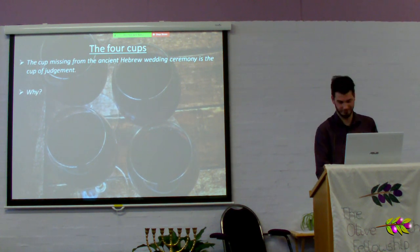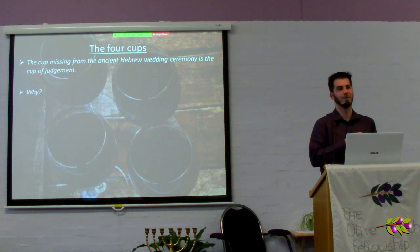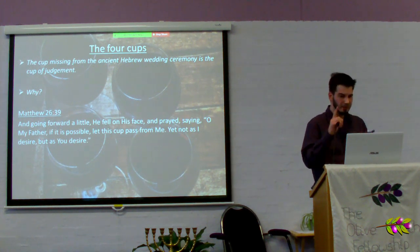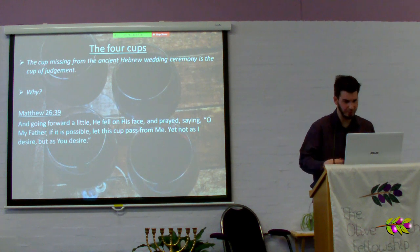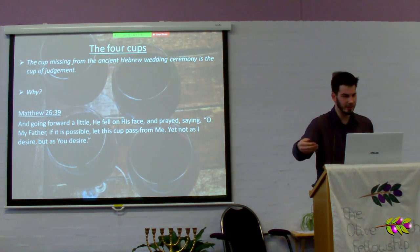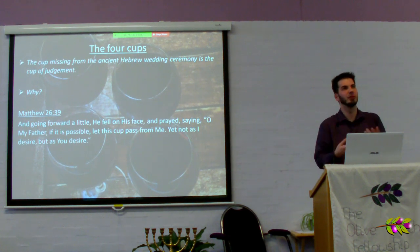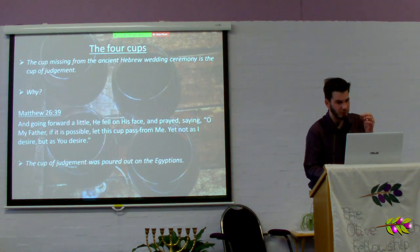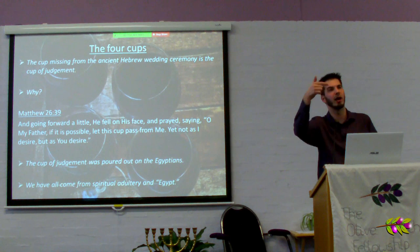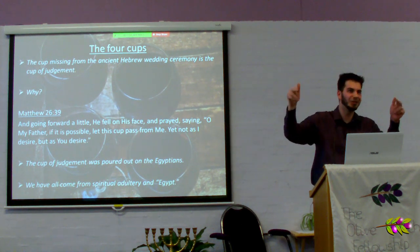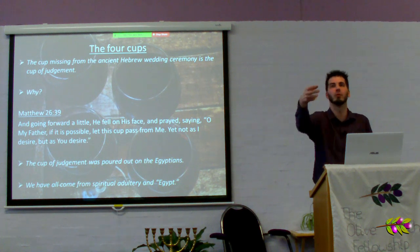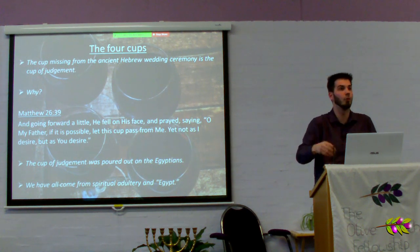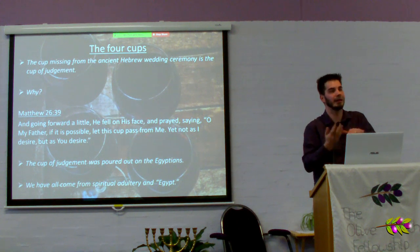Why is the cup of judgment missing from the ancient Hebrew wedding? We covered it in the first half. He fell on his face and prayed: 'O my father, if it is possible, let this cup pass from me, yet not as I desire, but as you desire.' Remember, the cup of judgment was salvation for the Israelites but judgment for the Egyptians — it was poured out on the Egyptians. Now, we have all come from spiritual adultery and 'Egypt.' We were the adulterous bride; therefore we need to be receiving this cup of judgment, the cup that Messiah drank — the bitter waters with the curses inside. All these things link to one another.